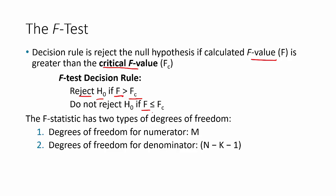In other words, if the F-statistic is not out beyond the F-critical, we will not reject the null hypothesis — we cannot accept the alternative. The F-statistic will have two types of degrees of freedom: degrees of freedom for the numerator, M, and the degrees of freedom for the denominator, N minus k minus 1. These will be used in the calculation of the F-statistic and also the F-critical value in Excel.